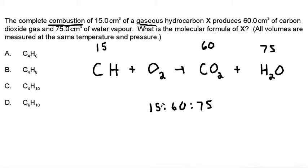If we divide all of these by 15, since they're all evenly divisible by 15, we get 1 to 4 to 5. Because 15 divided by 15 is 1, 60 divided by 15 is 4, and 75 divided by 15 is 5. So that gives us our molar ratios in our balanced reaction.